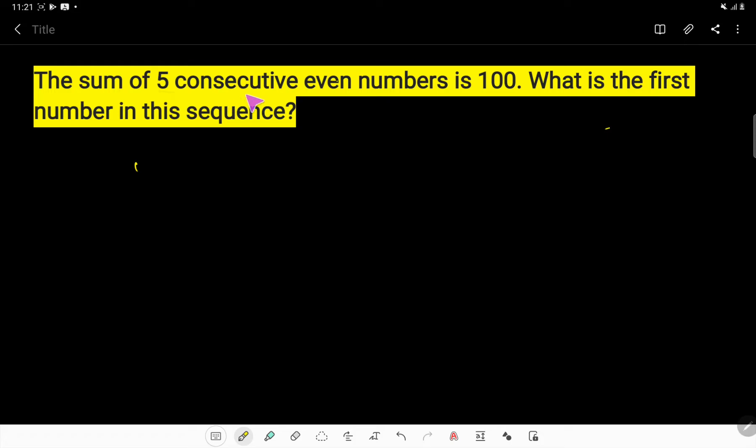The sum of 5 consecutive even numbers is 100. What is the first number in this sequence?